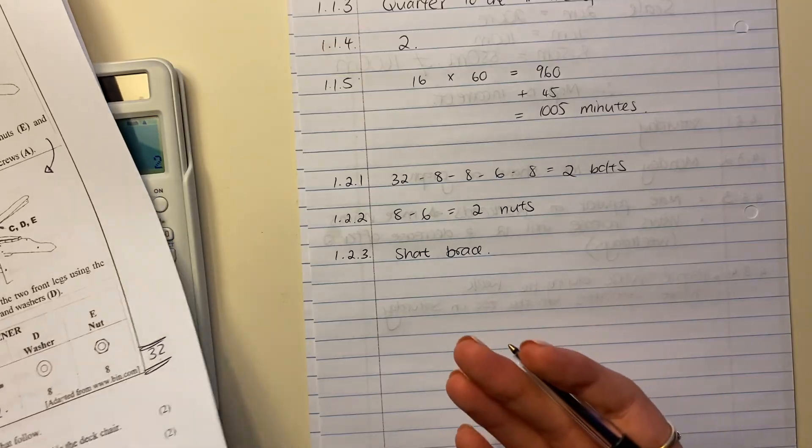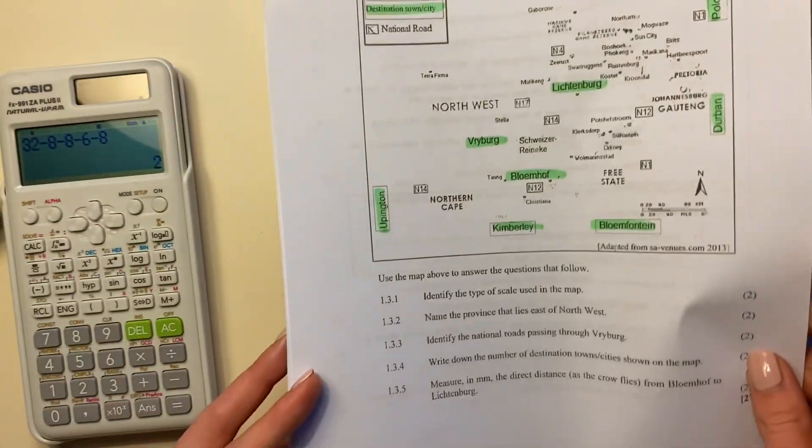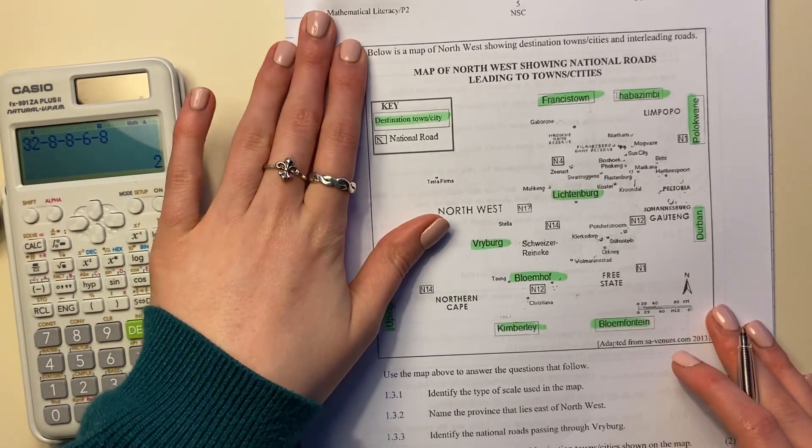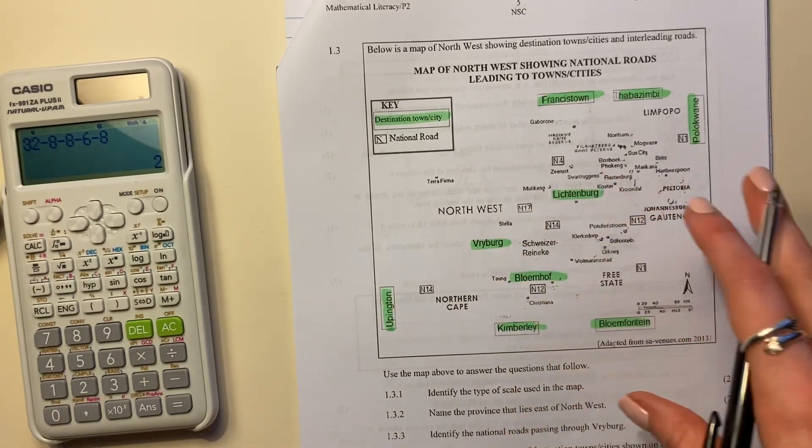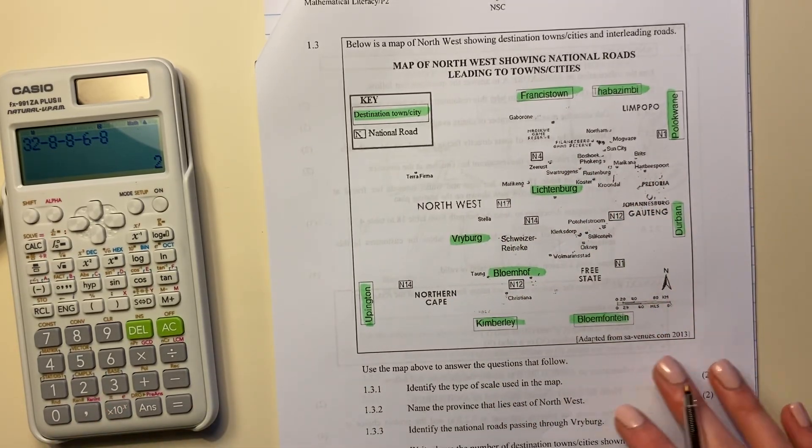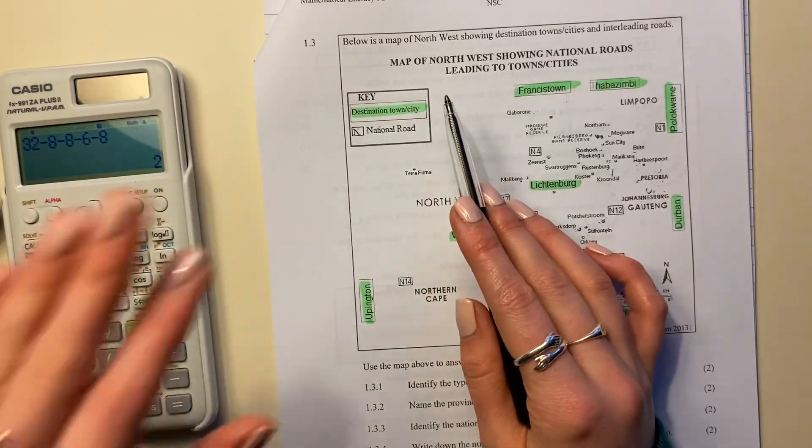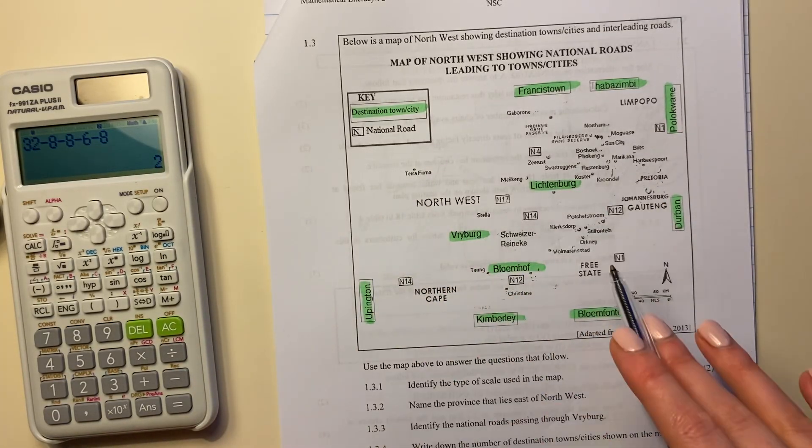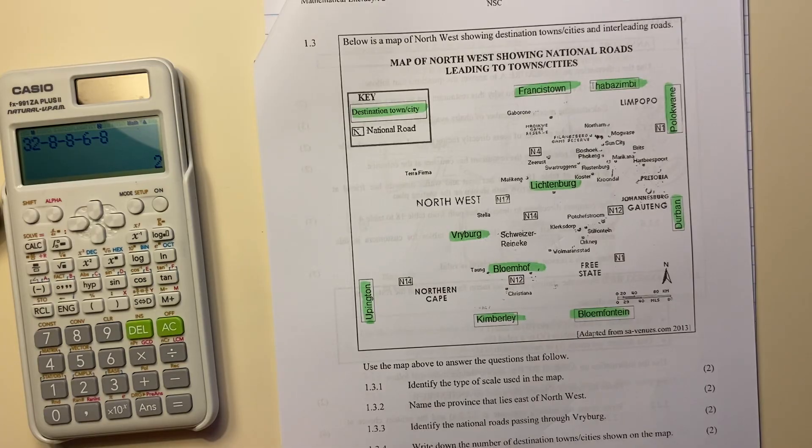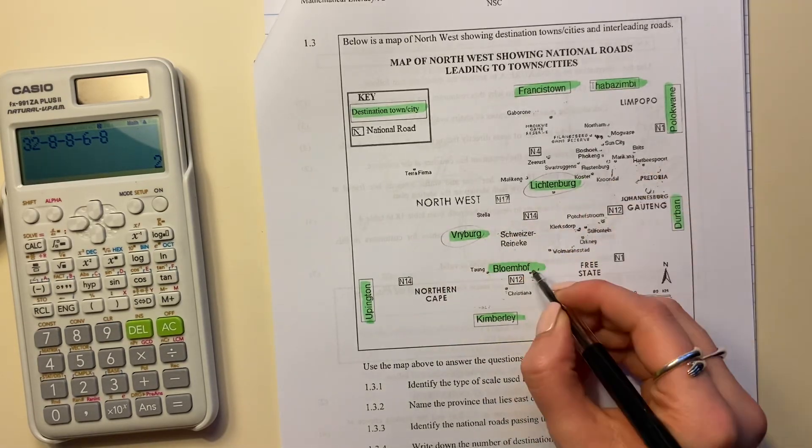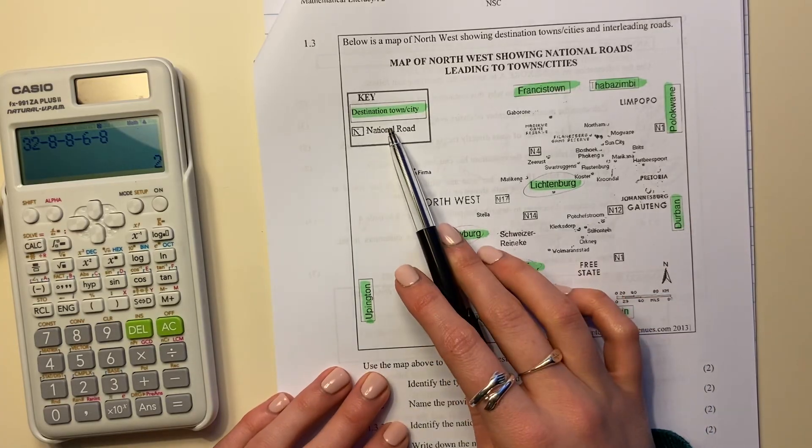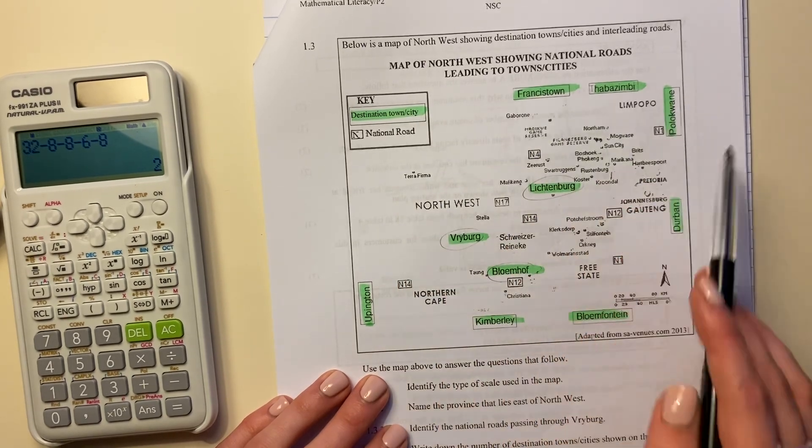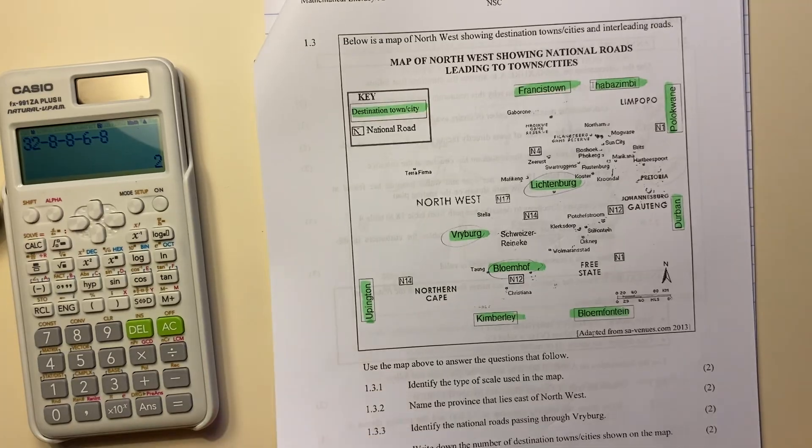Now because this video is short I'm going to continue with 1.3 and we're just going to finish off this question. Now my printer did me dirty again and it didn't print out my map so well. But I've highlighted it, looked at it online and made sure that I can answer this question appropriately. So here's a map. It says below is a map of northwest showing destination towns and cities and interleading roads. Now I've highlighted a couple things in green. Now Freiburg, Lichtenberg and Blomhof, those are not destination town cities. Why? Because they haven't got those little borders around them. So only these ones are our destination ones. So let's look.